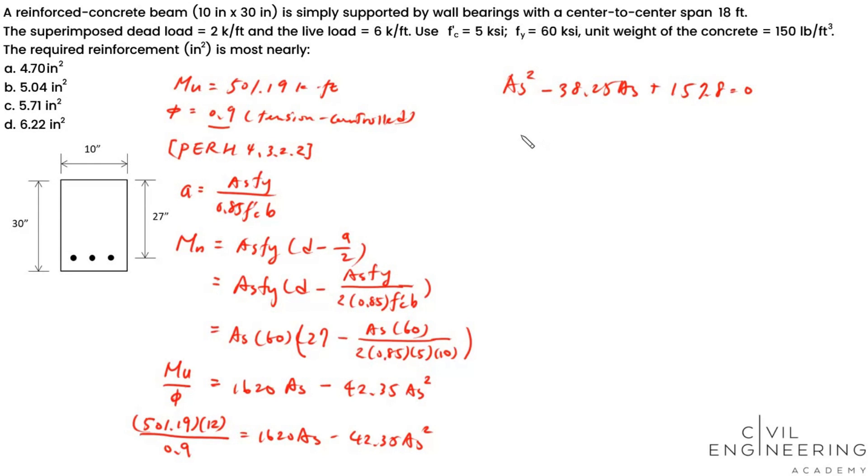If we rearrange this equation we'll get As-square minus 38.25 As plus 157.8 equals zero. At the end we just have to solve for this equation. We'll have As equals 38.25 plus minus square root of 38.25 square minus 4 times 157.8, then divided by 2. You'll get two options: 33.55 or 4.70. We all know that 4.70 is our answer, but let's also double check whether 33.55 could also be an answer. The way we validate this is to check if this reinforcement area will give us tension control section, which is our assumption of using strain reduction factor 0.9.